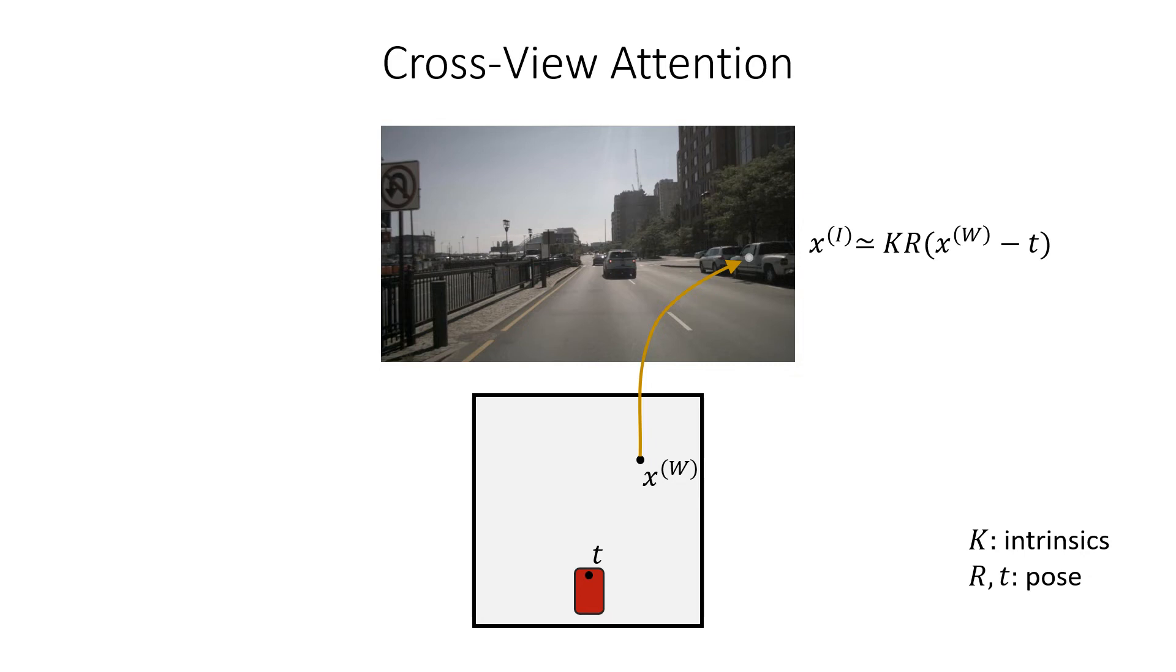So here on the right is the projective mapping between the two points, and what we can do is simply convert this into a simple distance metric in the form of a dot product. By now, this relationship looks a lot like attention, where the points in the world are our queries, and the pixels in our images are the keys.